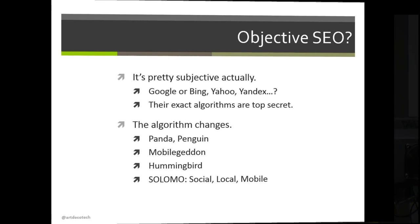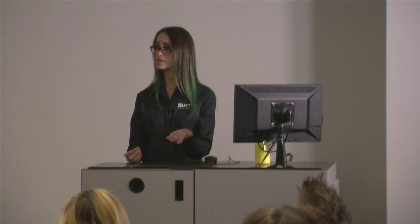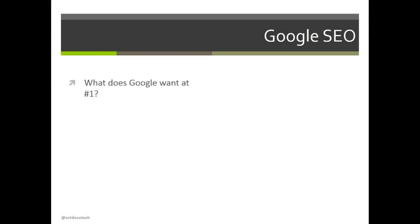Hummingbird was a really interesting update that started to look at synonyms and changed the whole algorithm in terms of how things are ranked — for example, 'PC' and 'computer' being treated as the same thing. You might notice when you search in Google that the bolded words in the results aren't exactly what you typed. There's also the social, local, and mobile context: if you're logged into Google and a friend on Google+ has plus-oned a link, it might show up higher for you. Search is always changing.